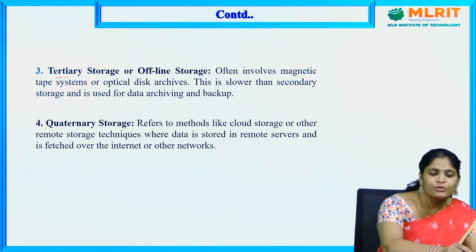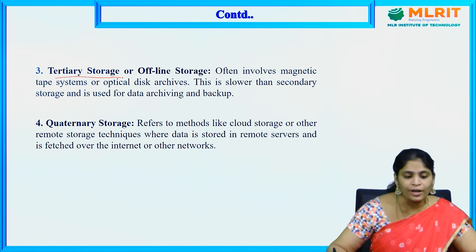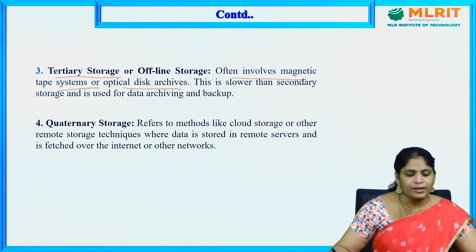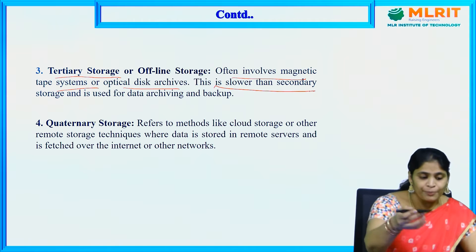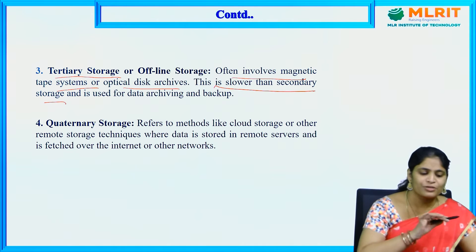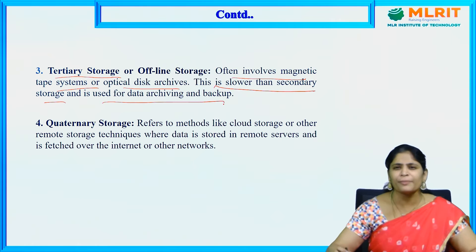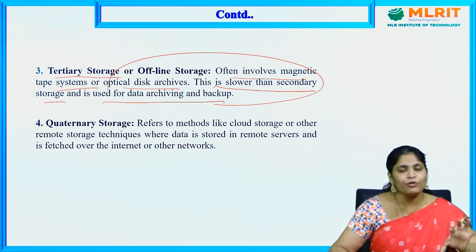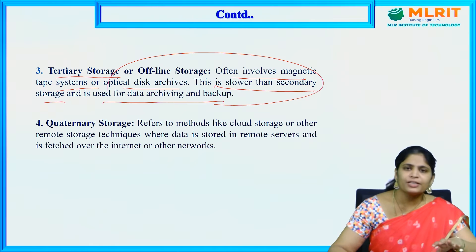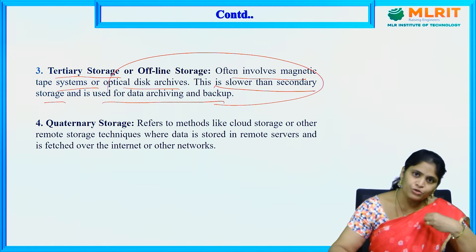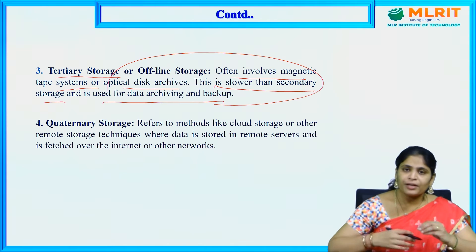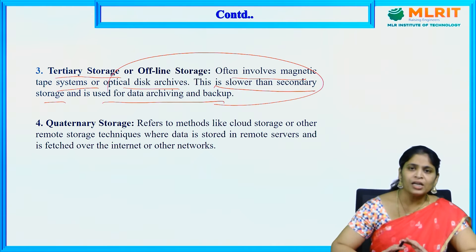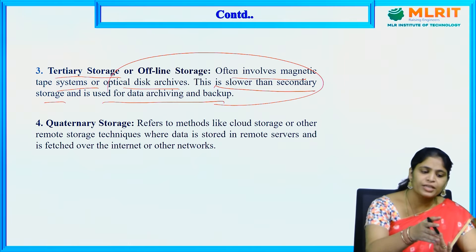The third type is tertiary storage or offline storage, which often involves magnetic tape systems or optical disk. This is slower than secondary storage devices and is used for data archiving and backup. Mostly, tertiary or offline storage is used for backup — if there is data we may not need in the future, we back it up using these tertiary storage devices.